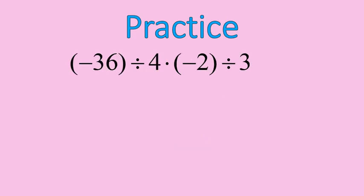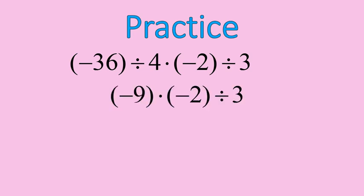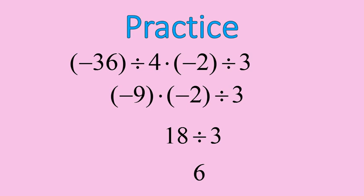Our final practice problem mixes division and multiplication. Remember the rules are exactly the same, so you can mix and match. Pause the recording and try this one on your own. Welcome back. Negative 36 divided by 4 gives you negative 9. Negative 9 times negative 2 — a negative times a negative gives a positive — is positive 18. Then 18 divided by 3 is 6, giving us a final answer of positive 6. There are two negatives at the top, which is even, so we end up with a positive answer.